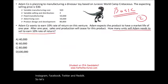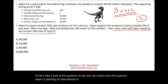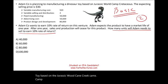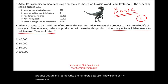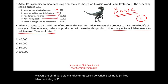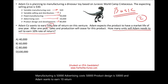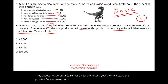Adam is planning to manufacture a dinosaur toy based on the Jurassic World Camp Cretaceous show. The expected selling price is $30. Variable manufacturing cost is $20, variable selling is $4, fixed manufacturing is $50,000, advertising cost is $50,000, and product design is $50,000. Adam wants to earn a 10% return on this operation. They expect this dinosaur to sell for a year, after which they will cease the product. So how many units will Adam need to sell to earn 10%?